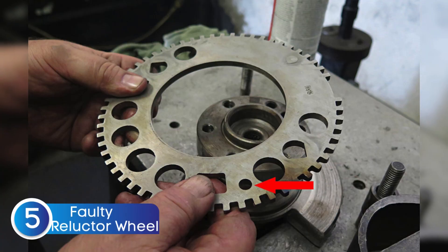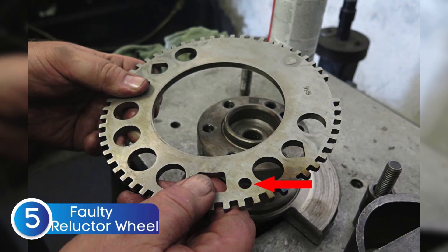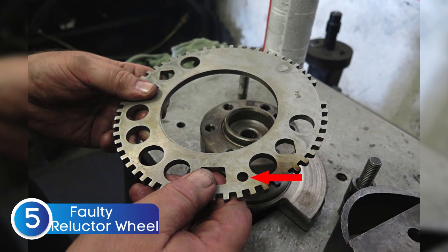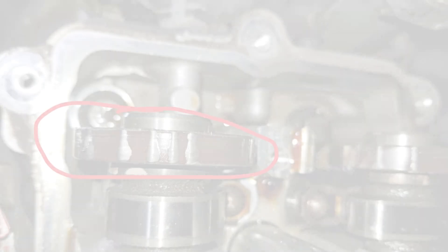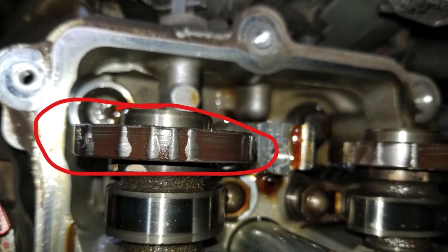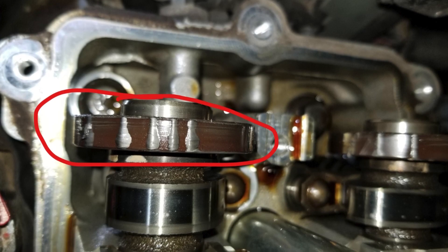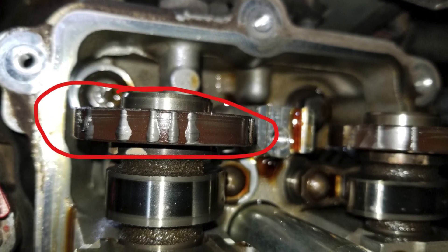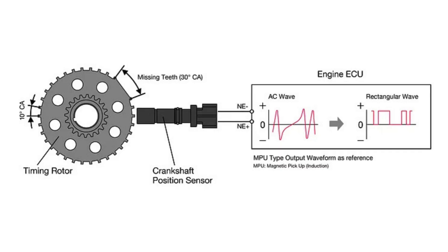The fifth cause is a damaged camshaft position sensor reluctor wheel. This is the part mounted on the camshaft that the sensor reads to determine its position. If the reluctor wheel is cracked, bent, misaligned, or has missing teeth, the sensor won't be able to produce an accurate signal. This can confuse the ECU and trigger the P0348 code, even if the sensor itself is perfectly fine.